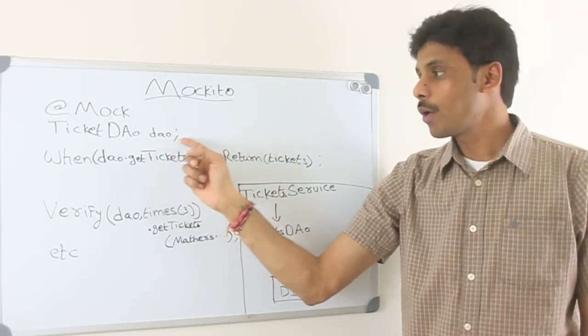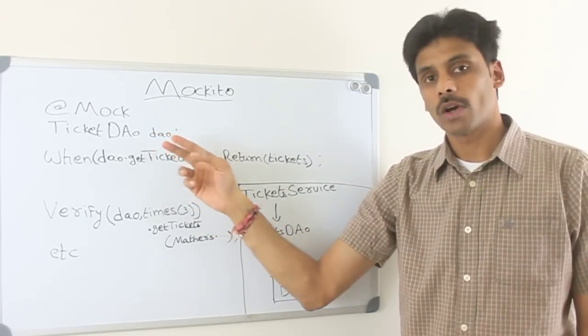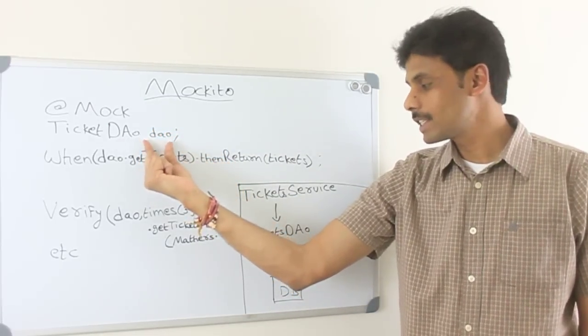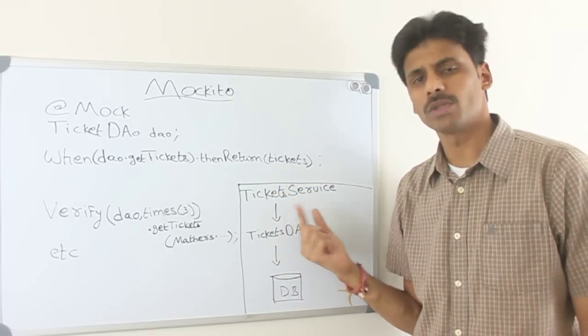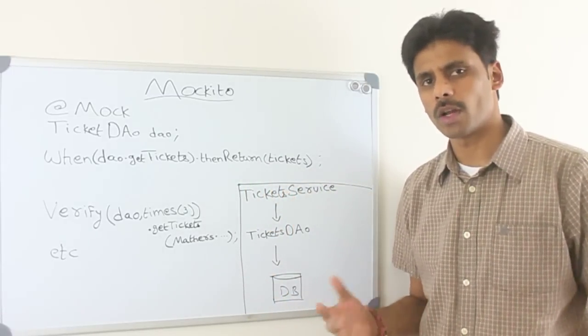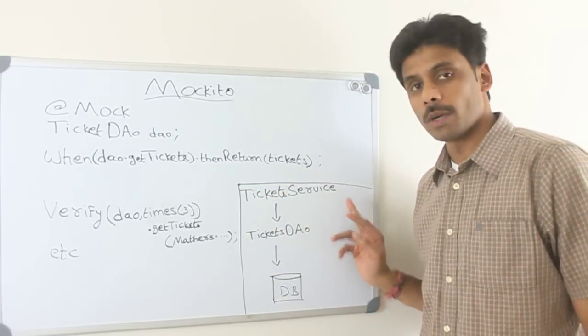I will pass this DAO into this ticket service using a setter method or a constructor depending on how we are making these two depend on each other.